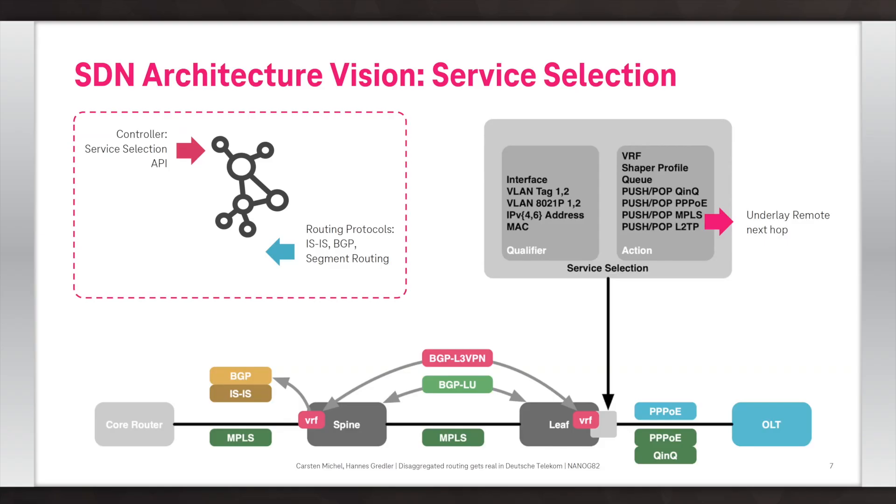Carsten has earlier alluded to starting with the classical CORD approach. CORD really means that you have a controller who micromanages each and every flow. When we actually did the math and said, on some of the larger central offices with potentially hundreds of thousands of subscribers, and further assuming that for some of those services you have to program up to 80 forwarding-related actions, we could not really envision how to size the controller properly to manage that load.